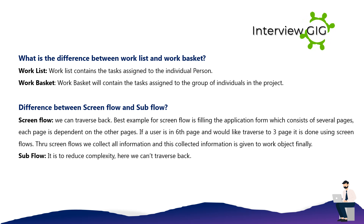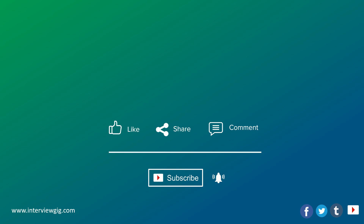Difference between screen flow and sub flow: Screen flow — we can traverse back. The best example for screen flow is filling an application form which consists of several pages, each page dependent on the other pages. If a user is on the sixth page and would like to traverse to the third page, it is done using screen flows. Through screen flows we collect all information, and this collected information is given to the work object finally. Sub flow is used to reduce complexity; here we cannot traverse back.